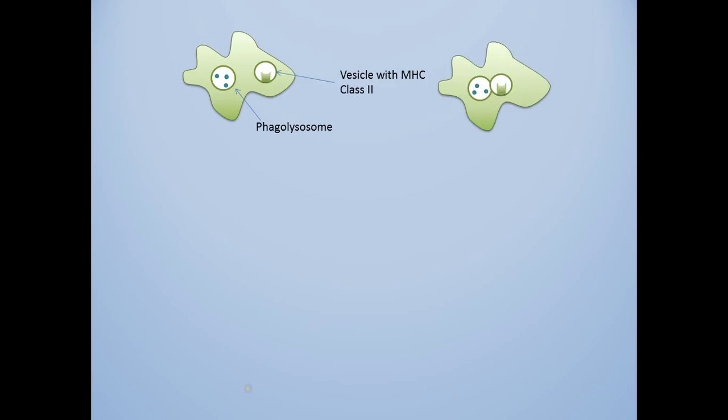In order to display the antigen, it must be loaded onto the MHC class II molecule. Next, the cell will move the vesicle containing the MHC antigen complex to its surface and the membrane of the vesicle fuses with the cell membrane.